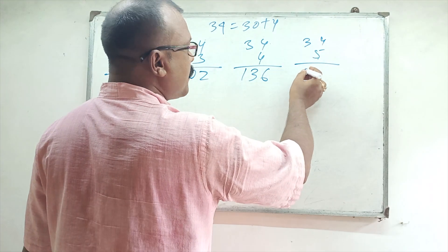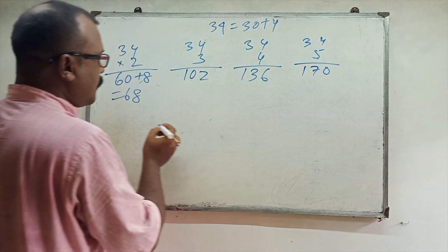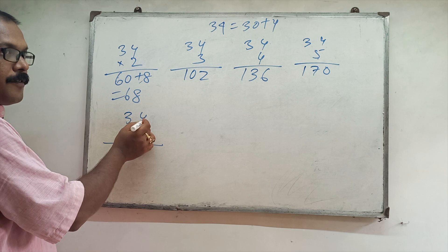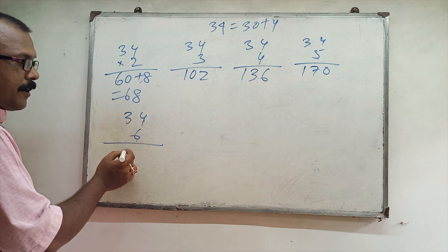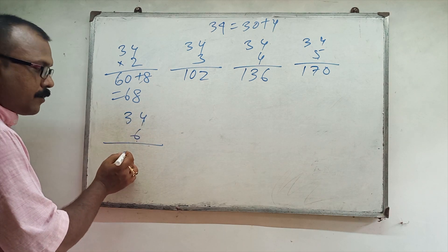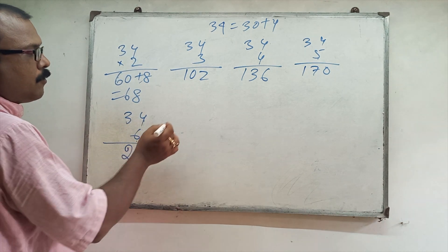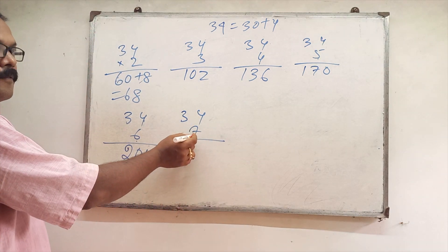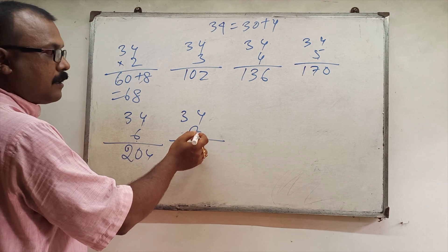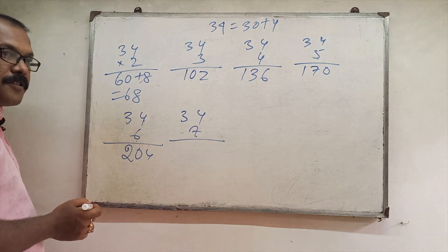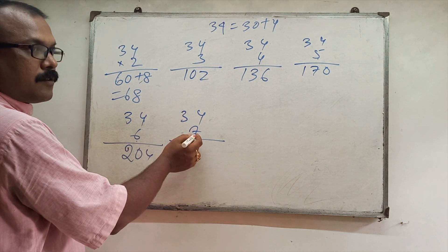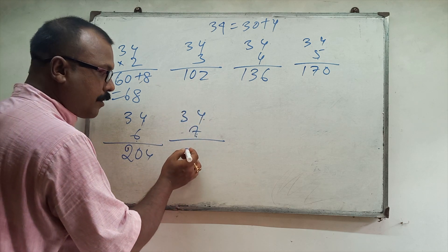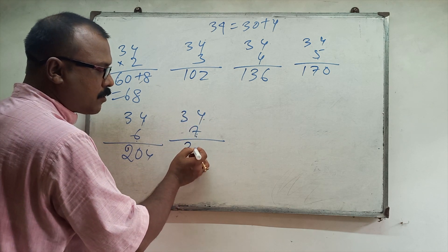150 plus 20 is 170. 34 sixes: 180 plus 24 is 204. 34 sevens: 210 plus 28, so 238.